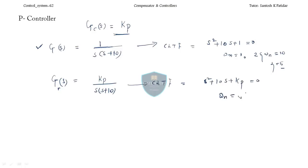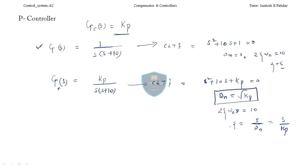Now omega_n is nothing but the square root of Kp. So 2·zeta·omega_n = 10, which means zeta is 5 divided by omega_n, and that is 5 divided by square root of Kp. So both omega_n and zeta are now in your hand — you can control the system's transient parameters.